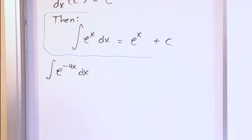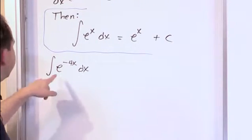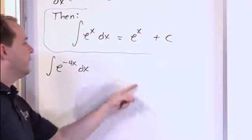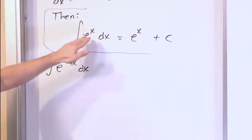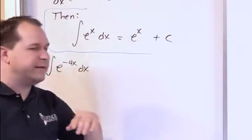Now, a beginner in calculus who didn't see this lesson might look at this and say, well, this is easy. The answer is just e to the minus 4x plus a constant, because we already said the integral of this is this plus a constant, so therefore, the integral of this must be the same thing.